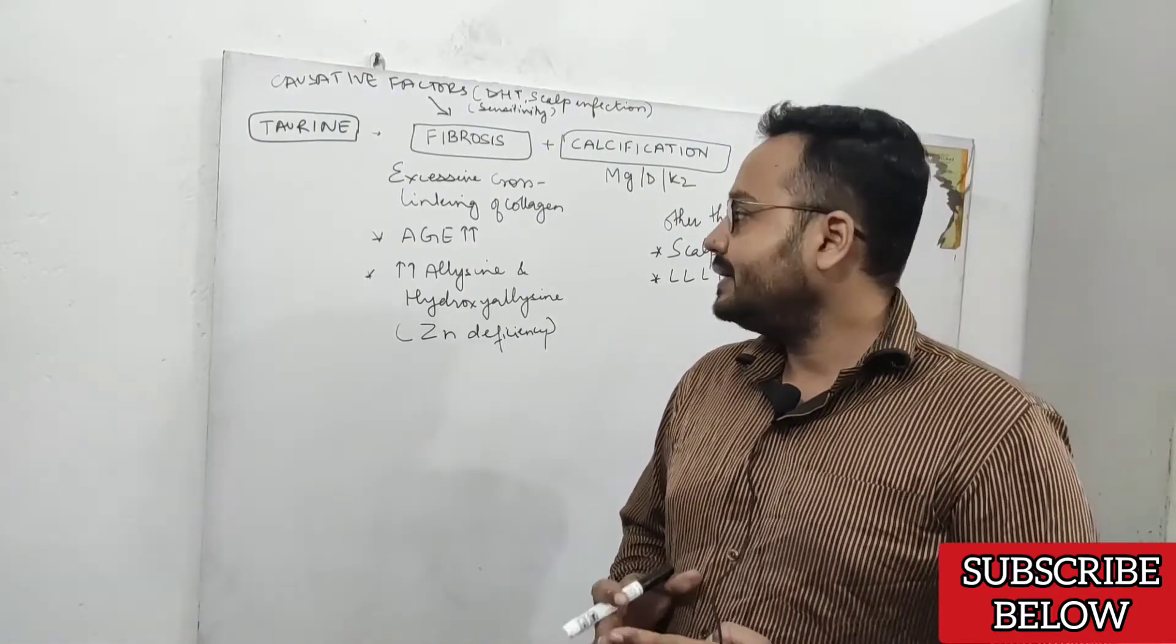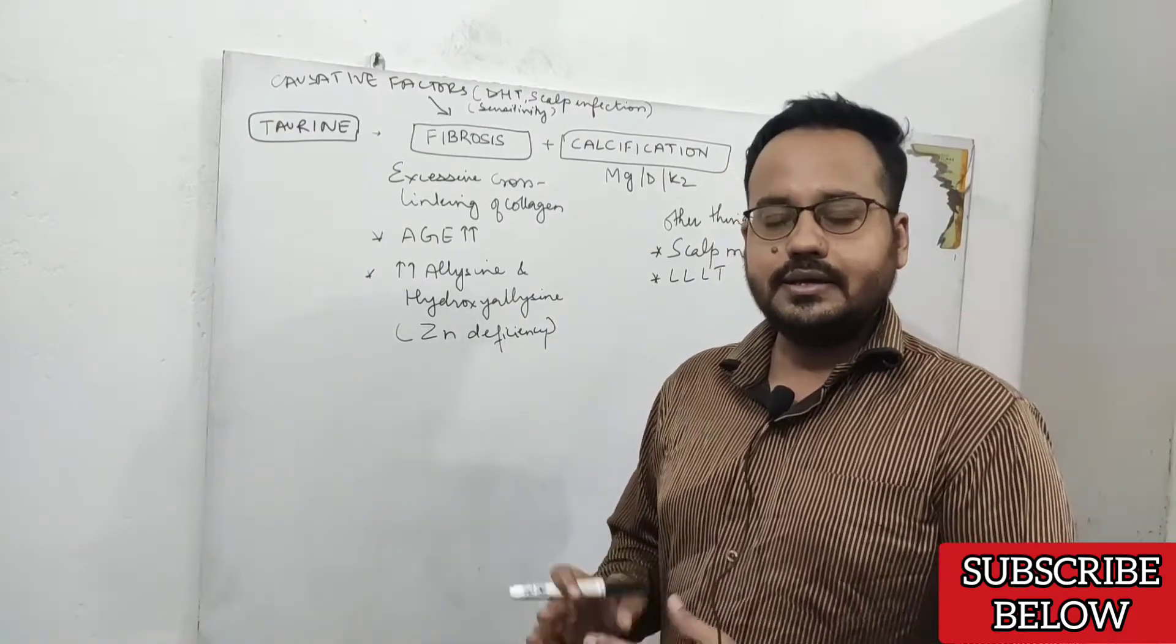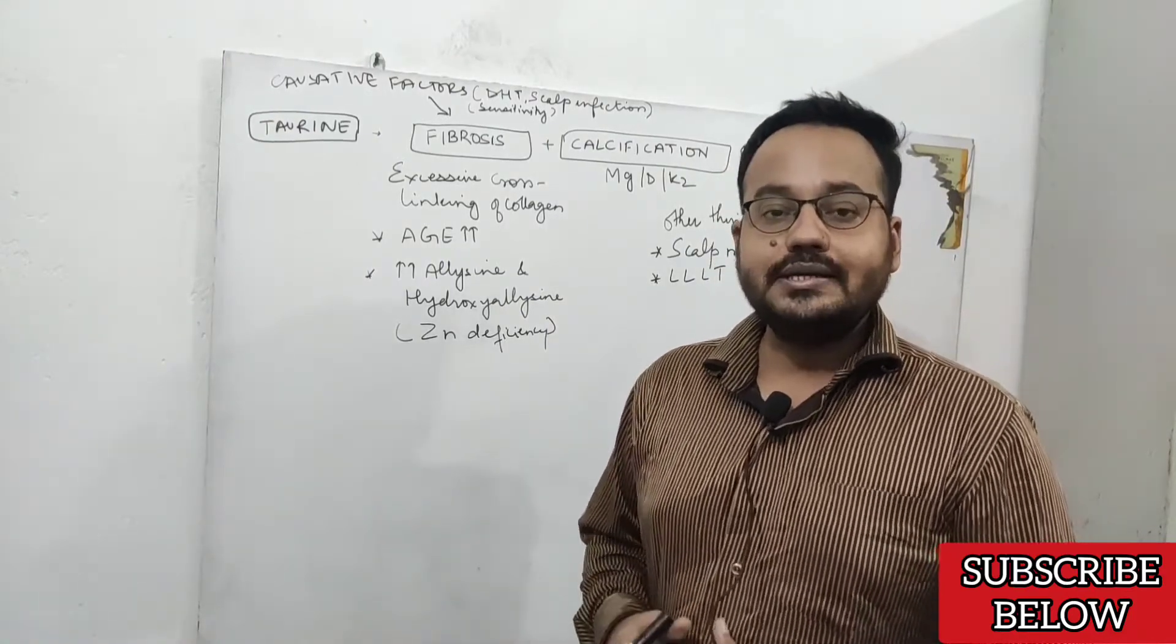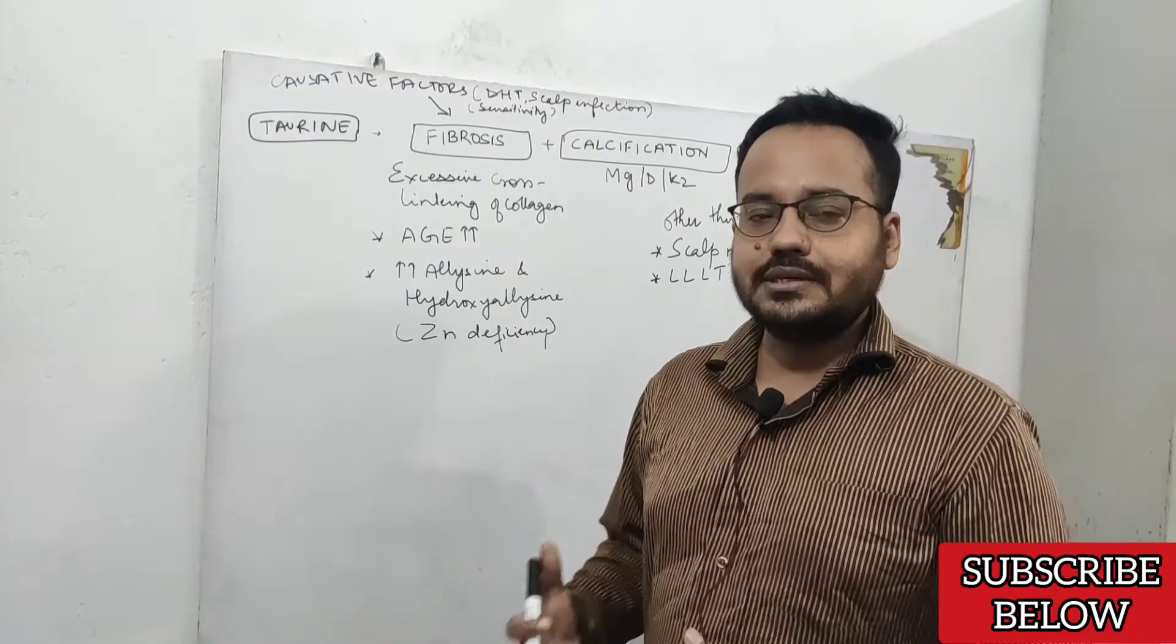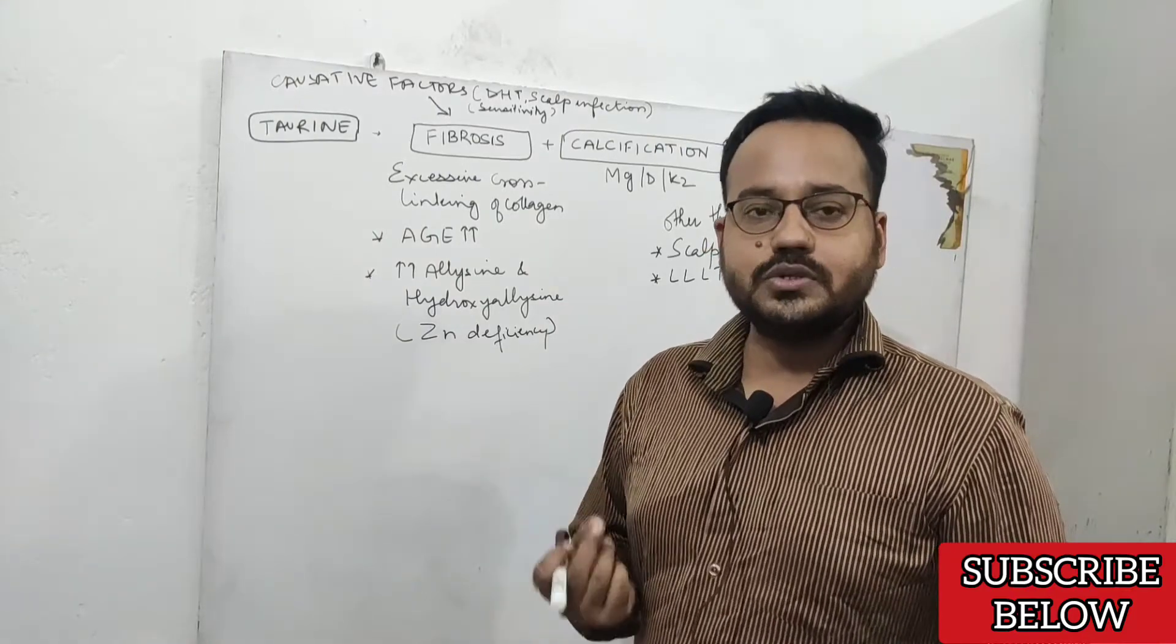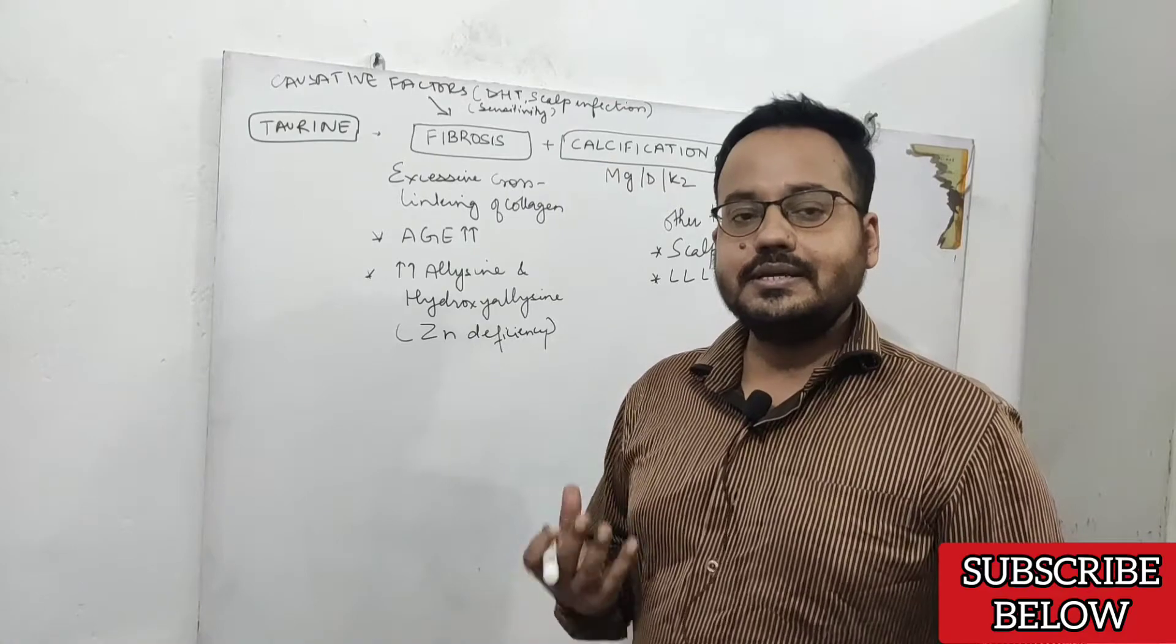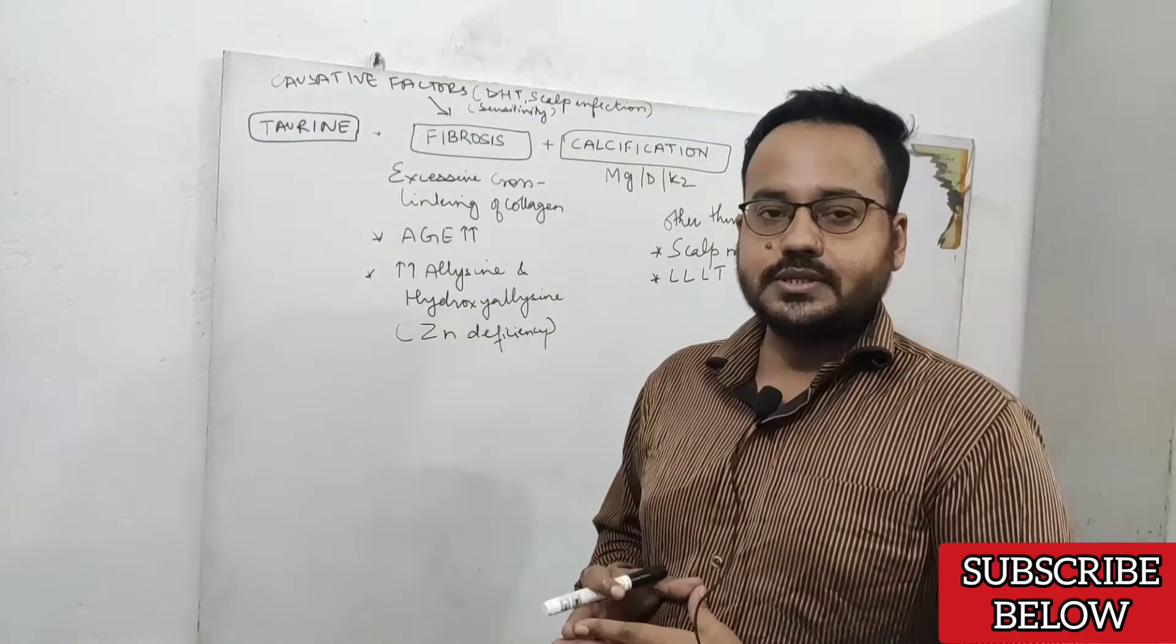Fibrosis happens because there is excessive cross-linkage of collagen. Cross-linkage is extremely important to provide strength to collagen, but when there is excessive cross-linkage, this can cause fibrosis and result in a condition commonly referred to as tight scalp.